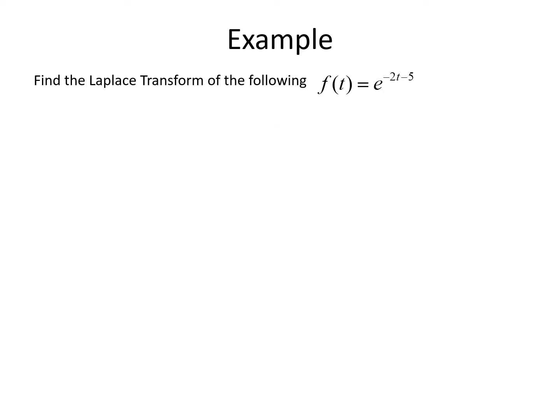One more example using the definition: we want to find the Laplace transform of e to the negative 2t minus 5. We plug this into the definition, so the Laplace transform is the integral from 0 to infinity of e to the negative st times e to the negative 2t minus 5. We combine those two exponentials, keeping the coefficient of t negative, giving us the limit as b goes to infinity of the integral from 0 to b of e to the negative 2 plus s times t minus 5.